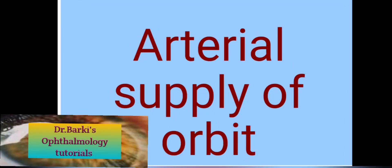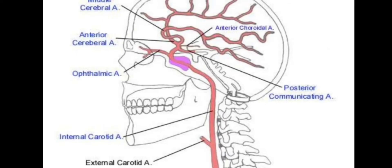Hello everyone, welcome back to my YouTube channel, Dr. Barki's Ophthalmology Tutorials. Before discussing the diseases of the orbit, one must know in detail about the vascular anatomy of the orbit — both arterial supply as well as venous drainage — in order to understand the disease processes of the orbit efficiently, and to help in the management of orbital diseases. In this video I will be discussing the arterial supply of the orbit.